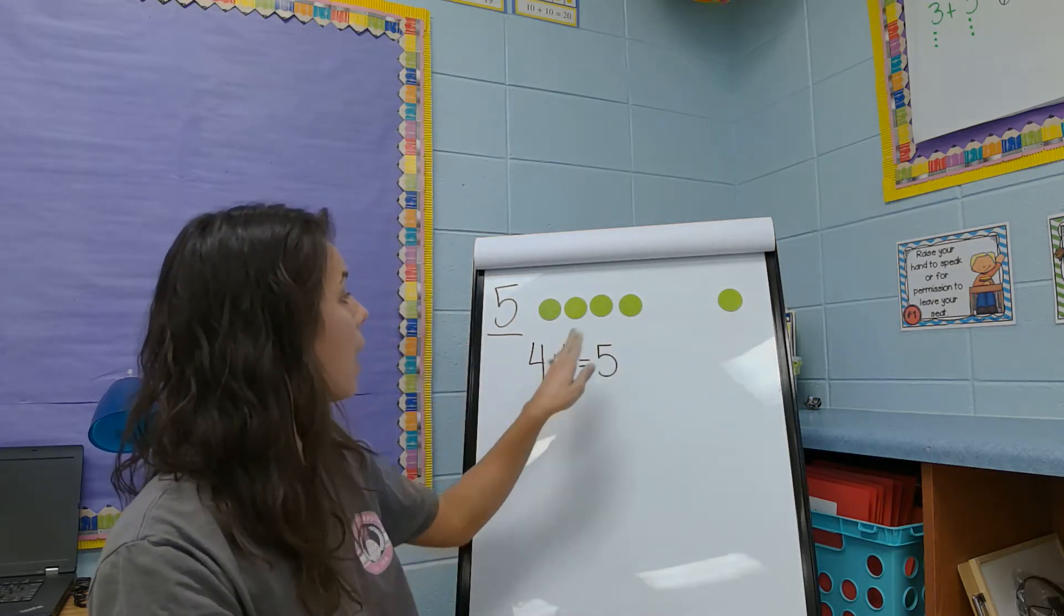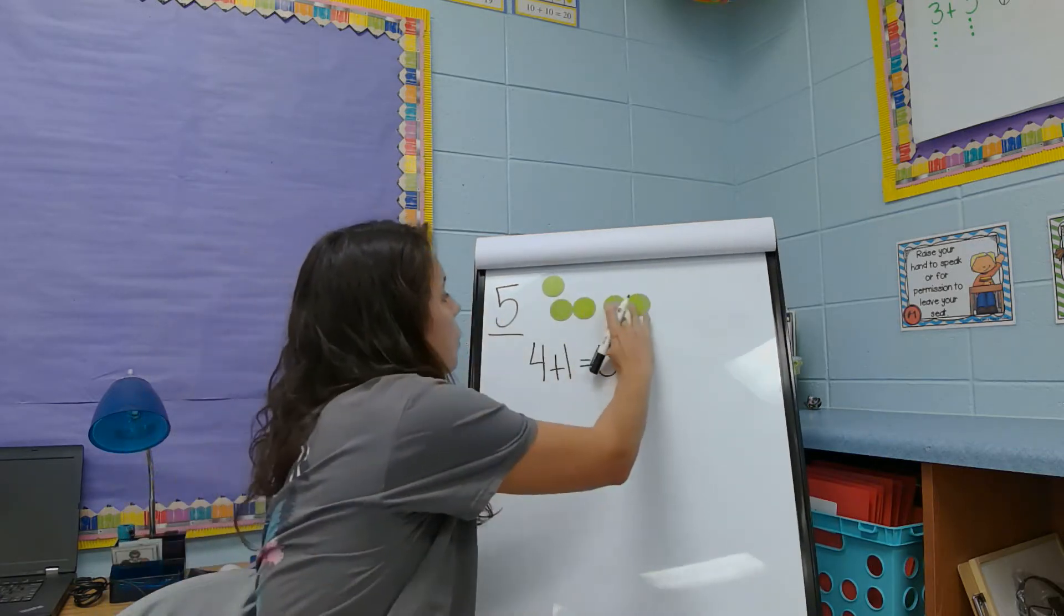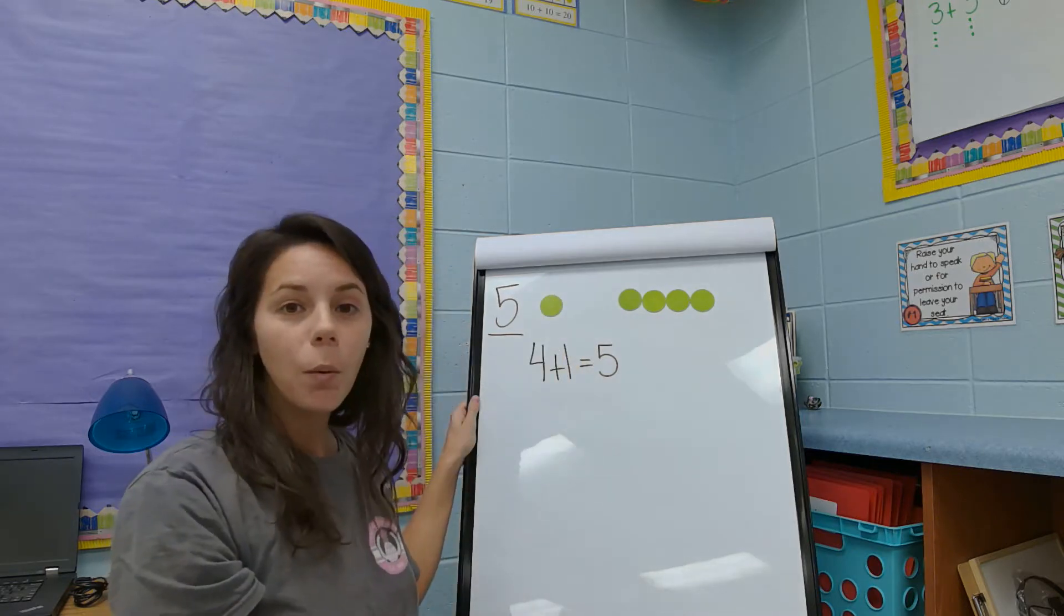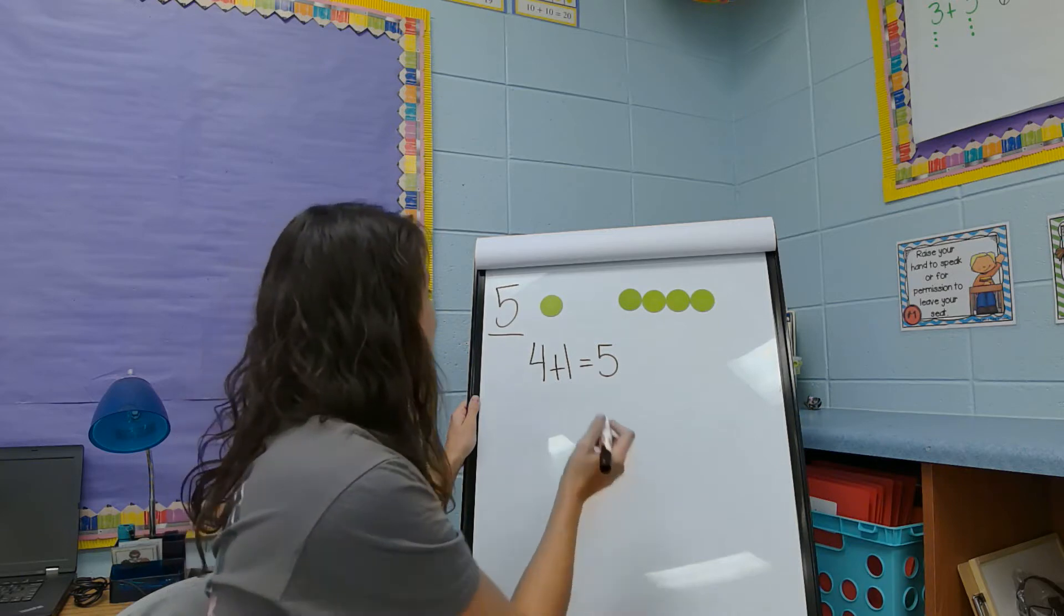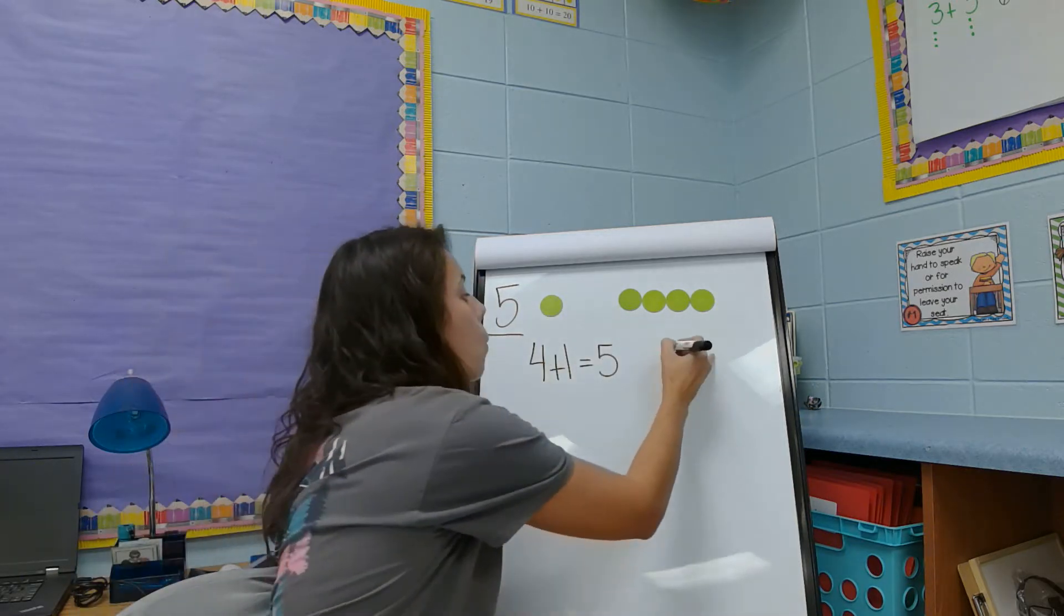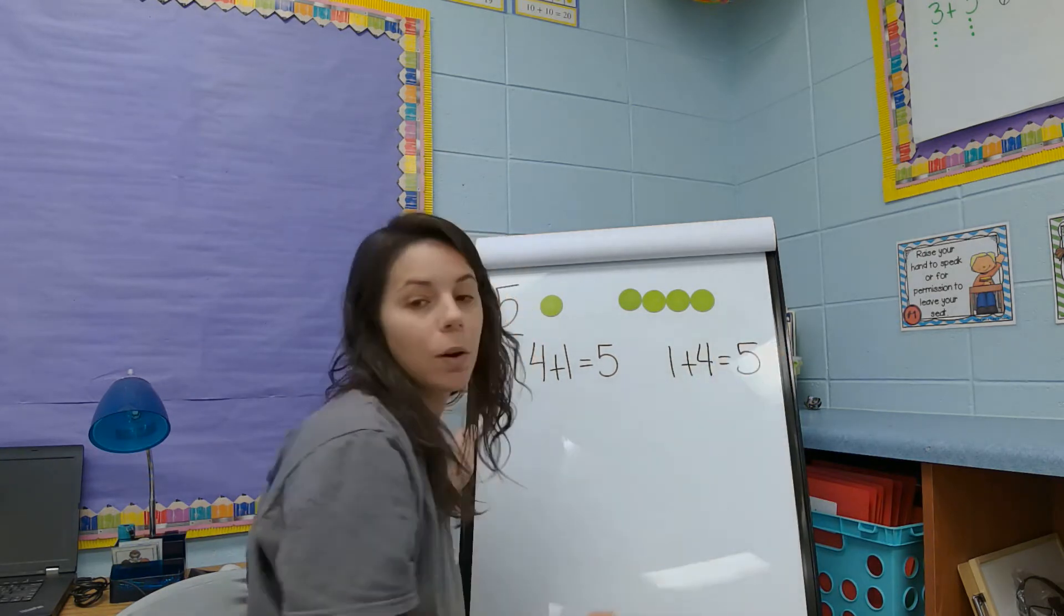Now if I was to move this dot over here and move this group of four over here, would it still equal five? That's right. So even if we swap the numbers, one plus four is still going to equal five.